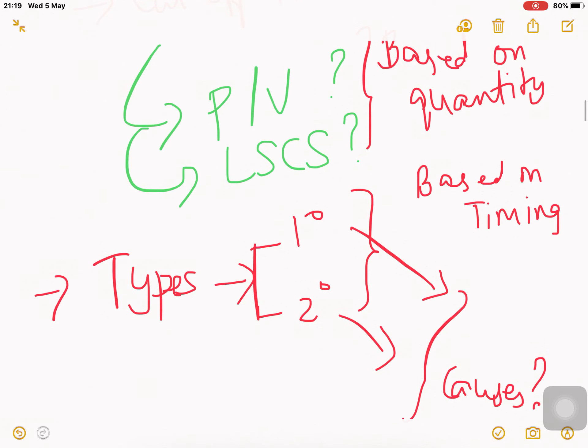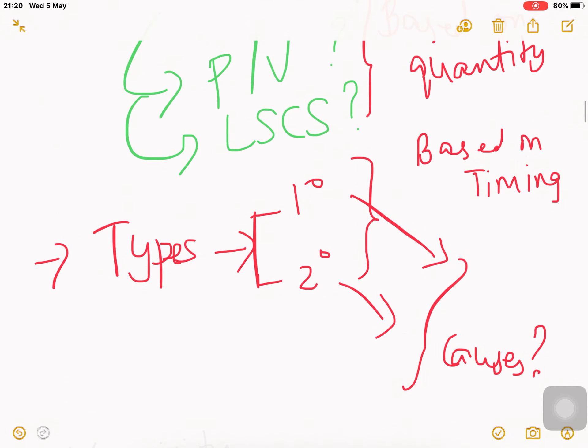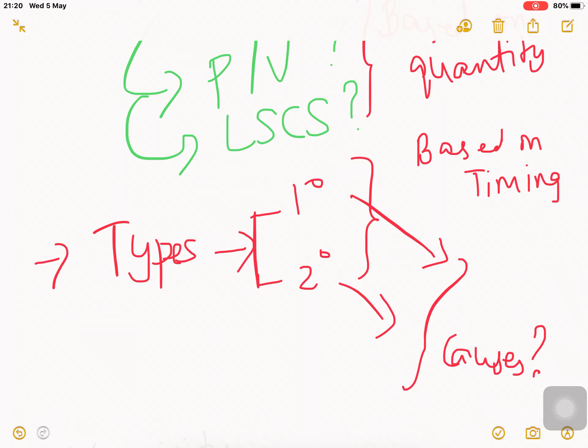There are two types of PPH: primary and secondary. Primary means no known cause, but it has four T's as the cause - tone, trauma, tissue, thrombin. Secondary PPH is caused by retained placenta. The distinction is timing: primary PPH happens within 24 hours after birth, whereas secondary PPH happens after 24 hours and up to 12 weeks after birth.